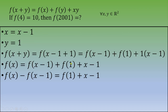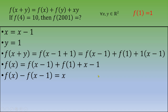Now we can substitute f(1) = 1 into our recurrence. So f(x) − f(x−1) = 1 + x − 1, which simplifies to f(x) − f(x−1) = x.